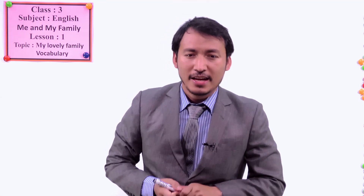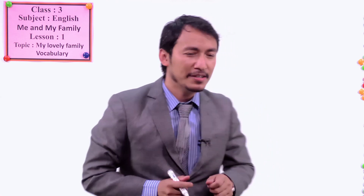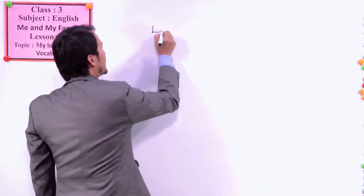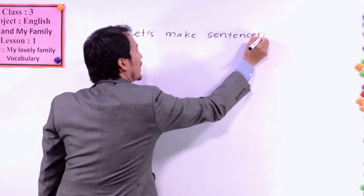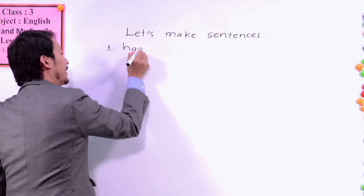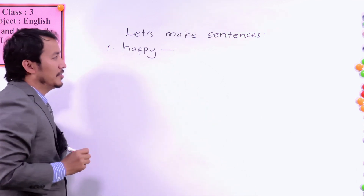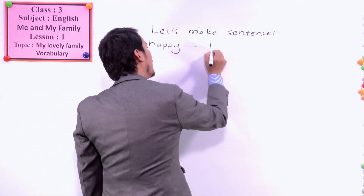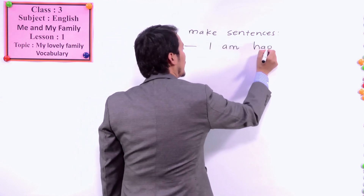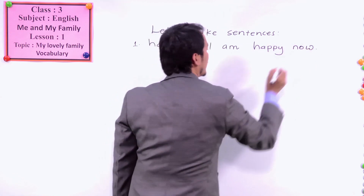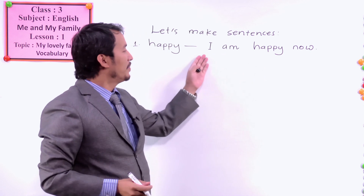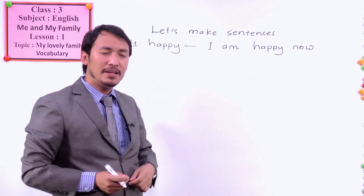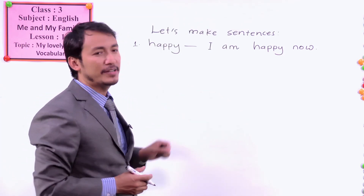Now I'd like you to make sentences. I'll give you some examples and you can make similar sentences. From 'happy' — let's make a sentence. Number one is happy. You can say, 'I am happy.' I am happy now. You can make your sentence like this: 'I am happy now,' 'My friend is happy now,' 'My sister is happy now,' or 'I am feeling happy now.'